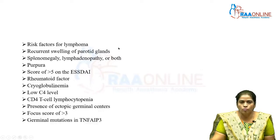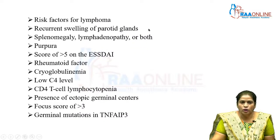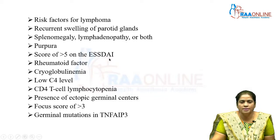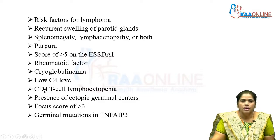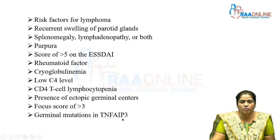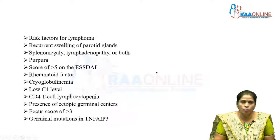The risk factors for lymphoma include recurrent swelling of the parotid glands, splenomegaly, lymphadenopathy, purpura on the skin, a score greater than 5 on the ESSDAI (Euler-Sjögren's Syndrome Disease Activity Index), rheumatoid factor, cryoglobulinemia, low C4 level, CD4 T-cell count lymphocytopenia, presence of ectopic germinal centers, a focus score more than 3, and germinal mutations in TNF-AIP3. If these are present, the patient is at higher risk for lymphoma.